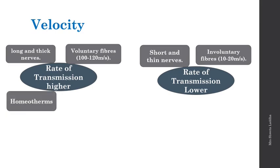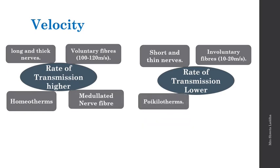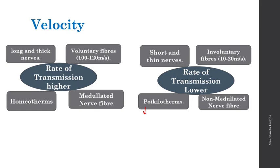In homeotherms — warm-blooded animals like birds and mammals that maintain their body temperature — the rate of nerve impulse transmission is greater. In poikilotherms — cold-blooded animals like amphibians, reptiles, and fish that cannot regulate body temperature — it is comparatively slower. Medullated nerve fibers have a higher rate of transmission because they show saltatory conduction, jumping conduction through the nodes of Ranvier. Non-medullated nerve fibers have a lower rate of transmission.